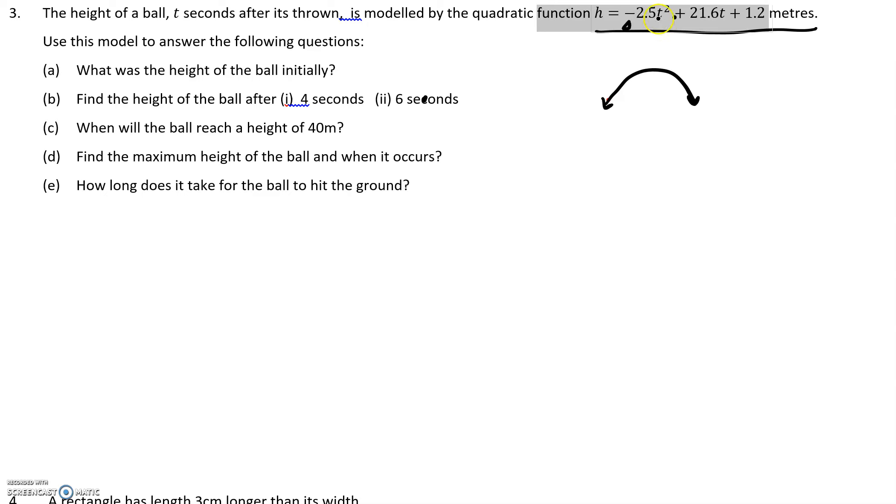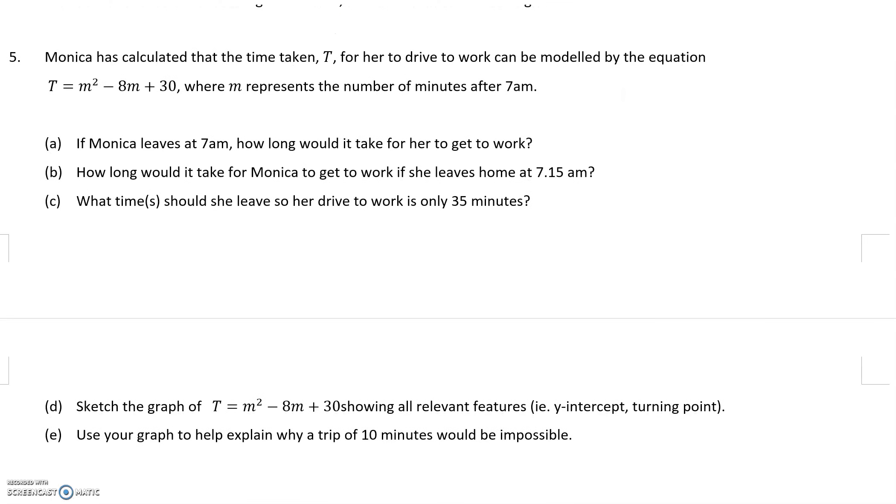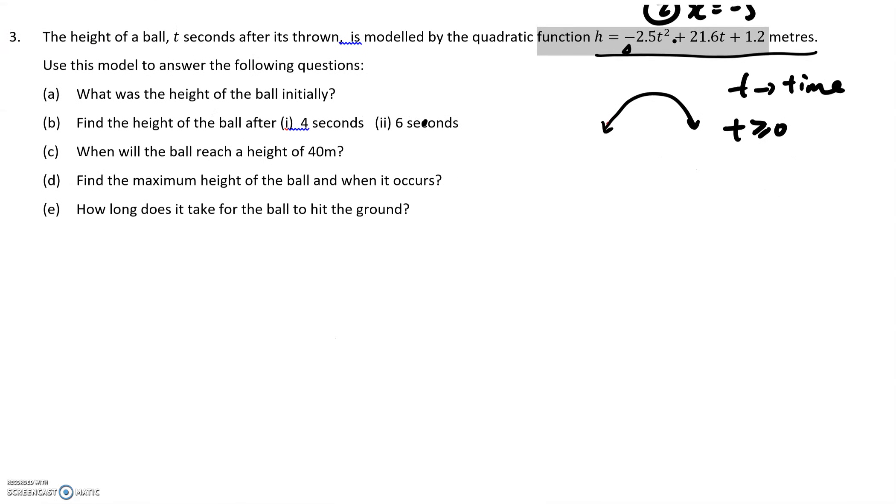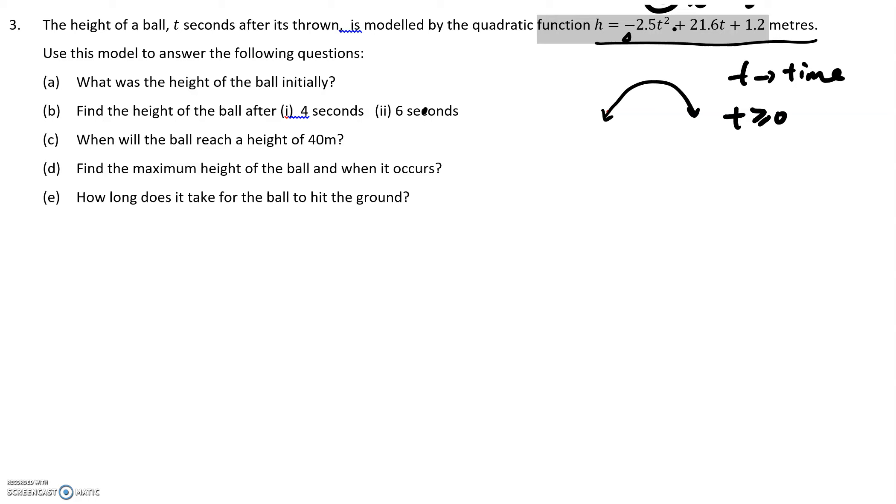And then my variable is not x and y, but it is t. T represents time. So basically, t has to be above or equal to 0, because you cannot have negative time, so therefore t has to be above or equal to 0.